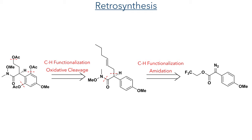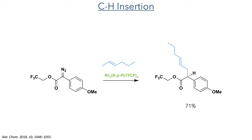So let's start the synthesis with this ester. This compound was reacted with 2-hexyne using a rhodium catalyst, which promoted a C–H insertion reaction to install the side chain in the position of the diazo group. This formed the product in a 71% yield as a single isomer.